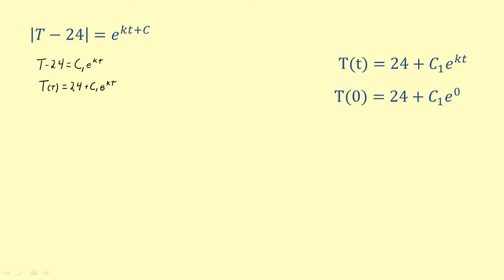So, set 78 equals 24 plus c sub 1. Solving for c sub 1, we find that c sub 1 equals 54.